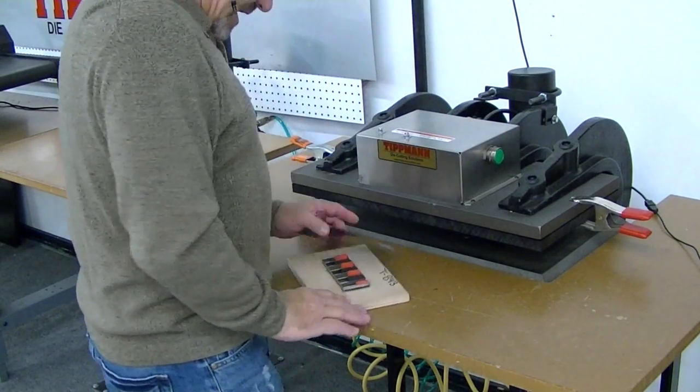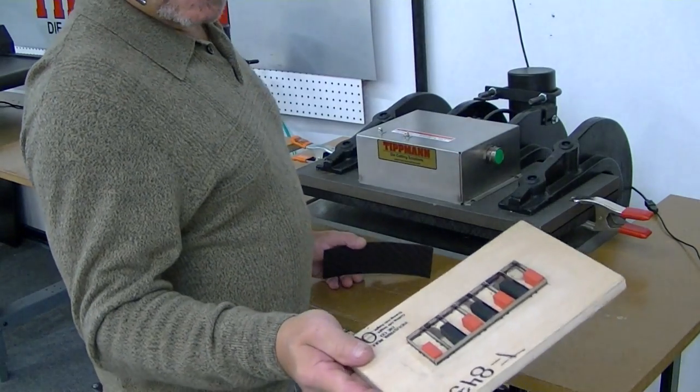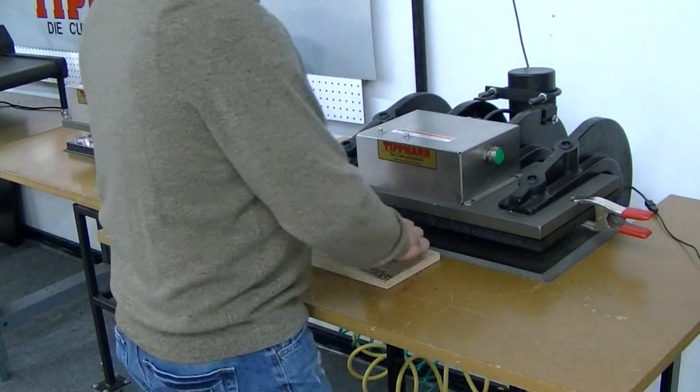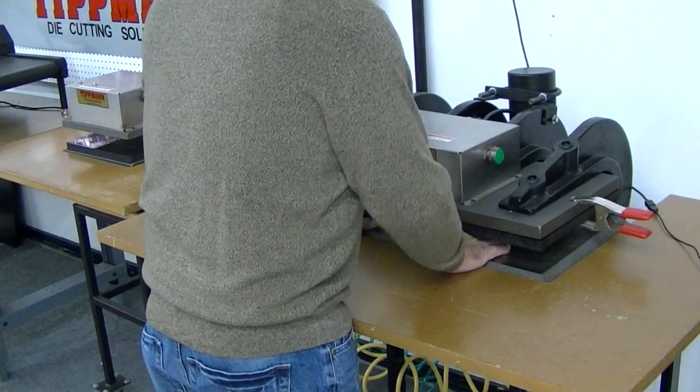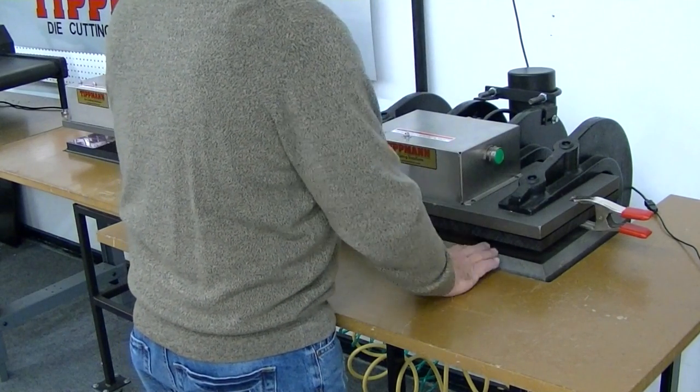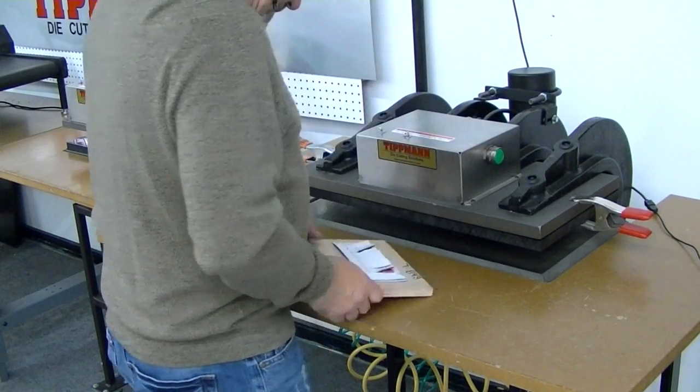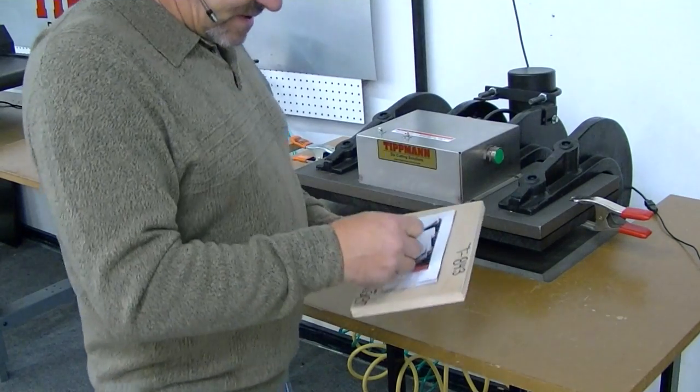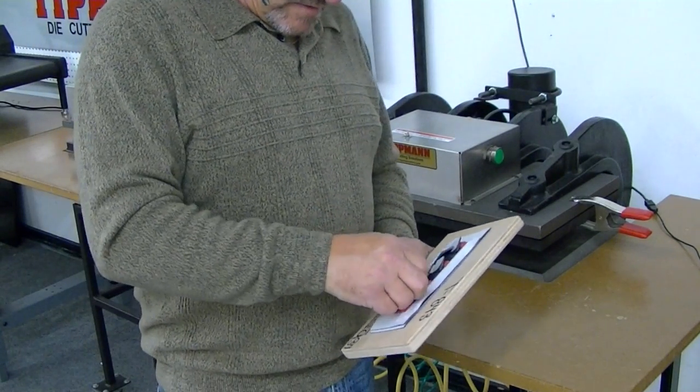We're using a steel rule die, a small cavity steel rule die. Slide that in. As you can see, it just pops everything out.